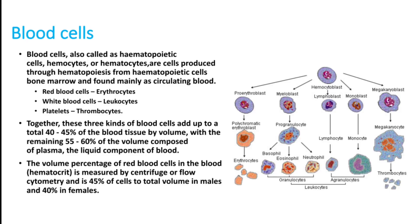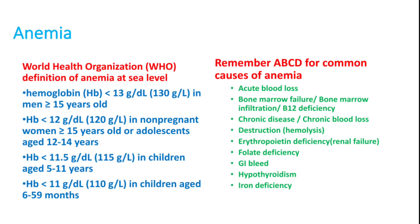Anemia is a condition where the number of RBCs or hemoglobin is low, and oxygen-carrying capacity is reduced. The definition varies by age: hemoglobin less than 13 g/dL in men over 15 years; less than 12 g/dL in non-pregnant women or adolescents aged 12–14; less than 11.5 g/dL in children aged 5–11; and less than 11 g/dL in children aged 6–59 months, as defined by the WHO.